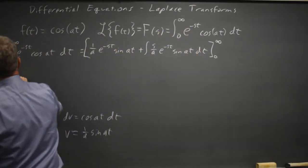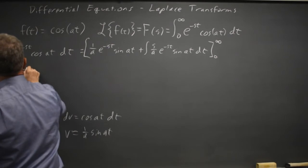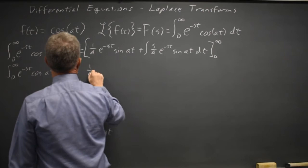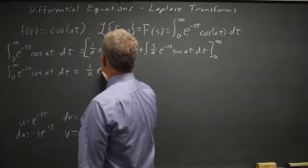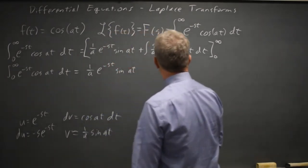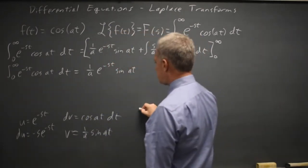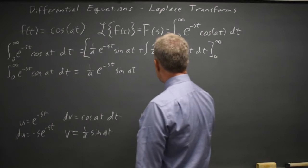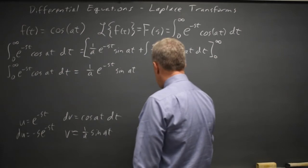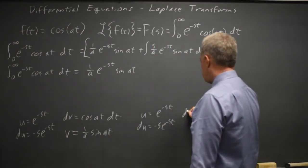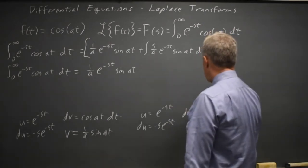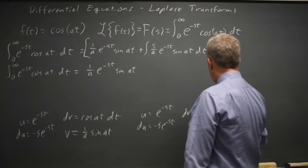So my original integral is 1 over a, e to the negative s t, sine a t, and then plus whatever I get from parts. So parts, I'm going to have u equals the exponential again, e to the negative s t, so du is negative s e to the negative s t. And dv equals the trig function. I'm going to keep the coefficient with it, s over a, sine a t.